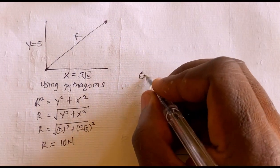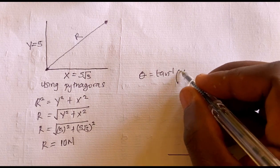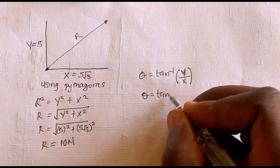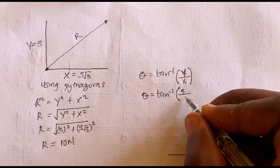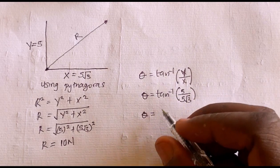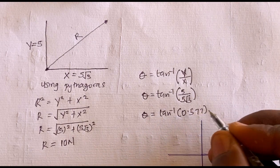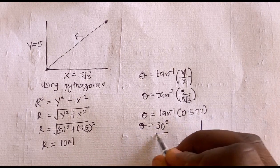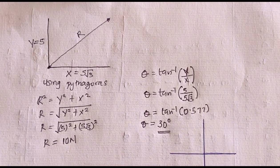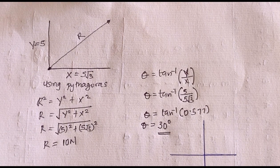To calculate the direction, theta equals tan inverse of (y/x) = tan⁻¹(5 / 5√3) = tan⁻¹(0.577), which gives theta = 30 degrees. So the resultant force is 10 newtons at 30 degrees. If you found this video helpful, kindly click the like button, share the video with your friends, and thanks for watching.